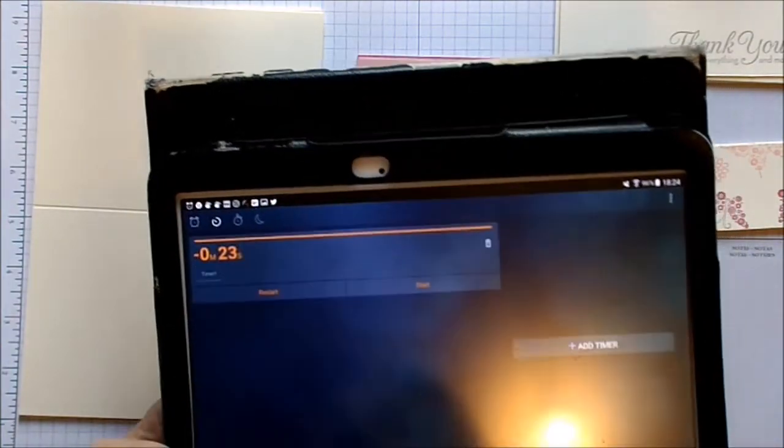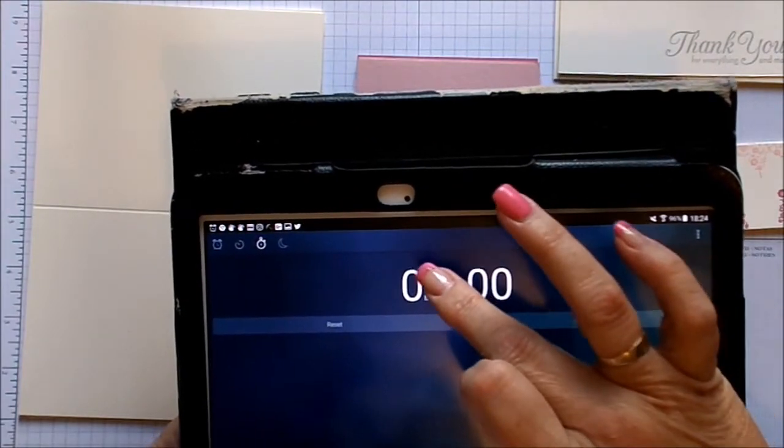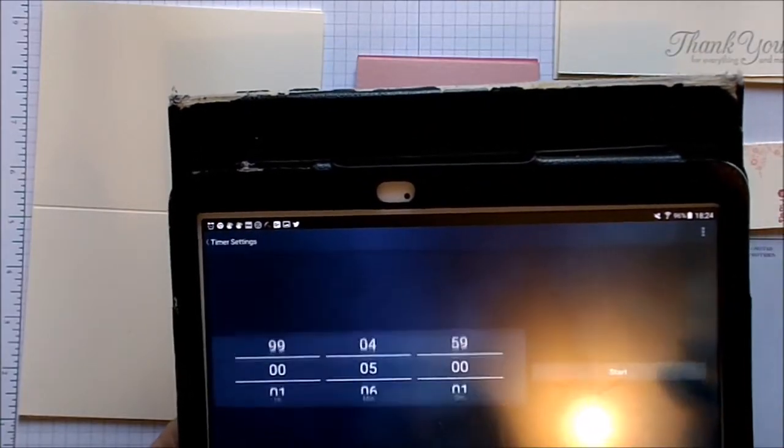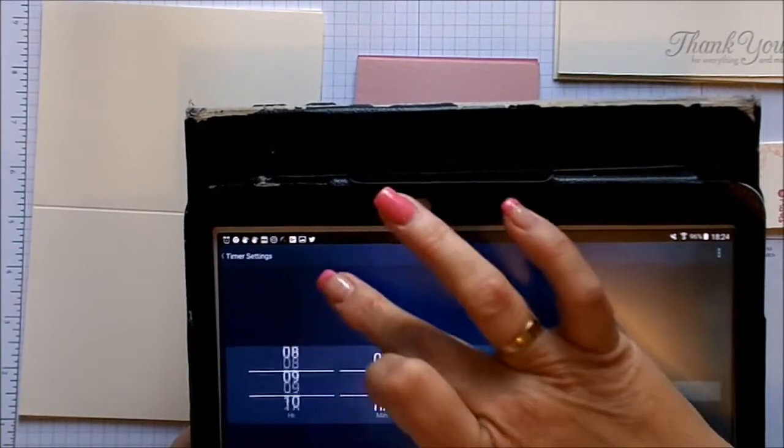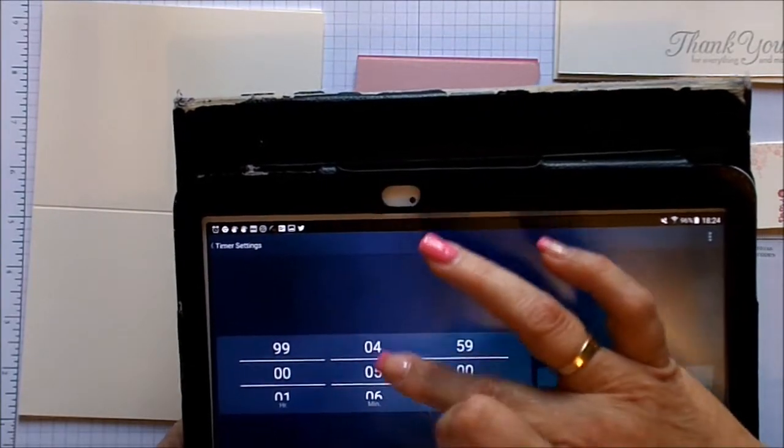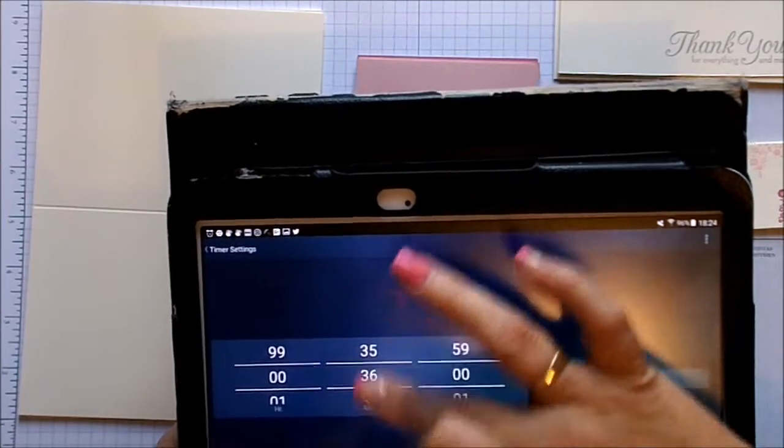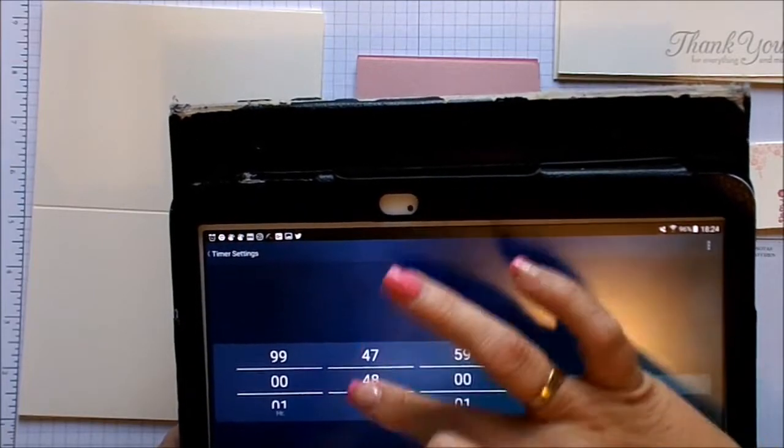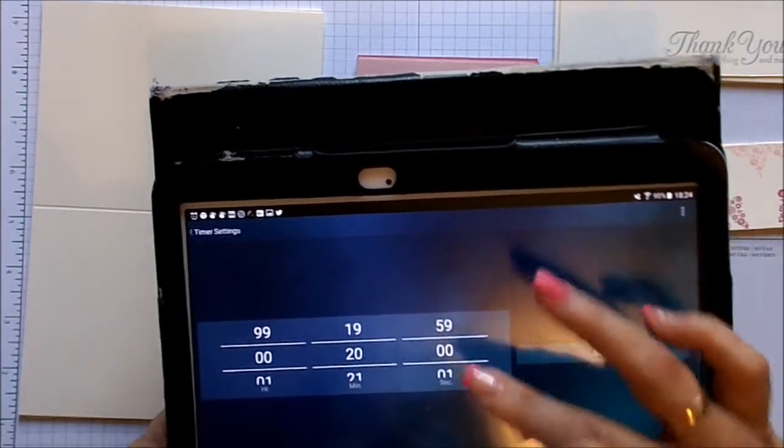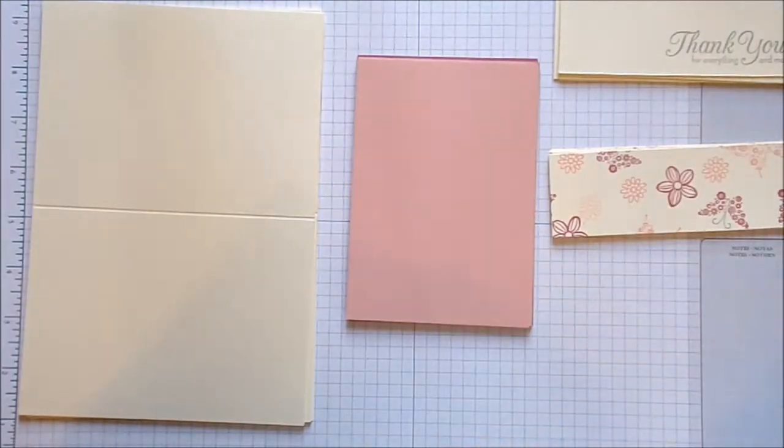So we'll go to timer. We'll add a time. So I want 20 minutes. You can tell I use this a lot, not. Okay, so we've got 20 minutes. So we'll click on start and that's going to start counting down.